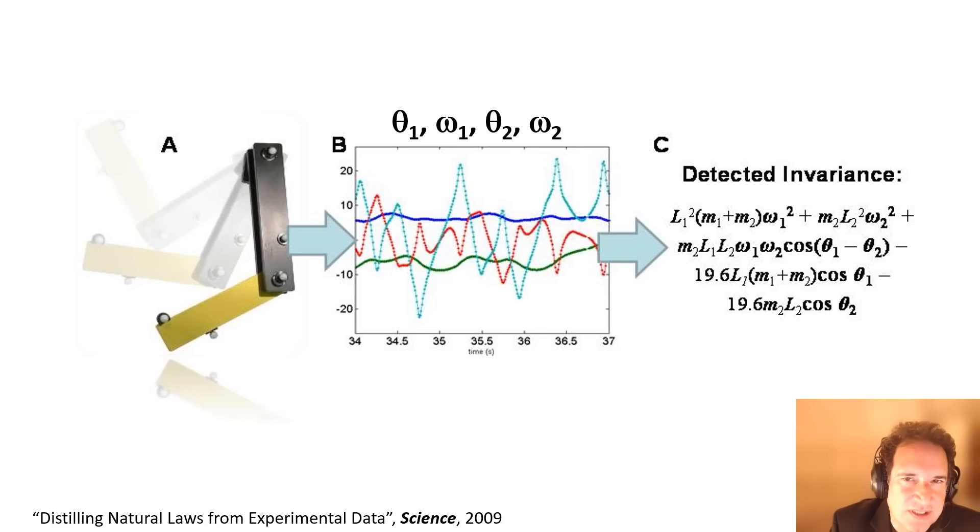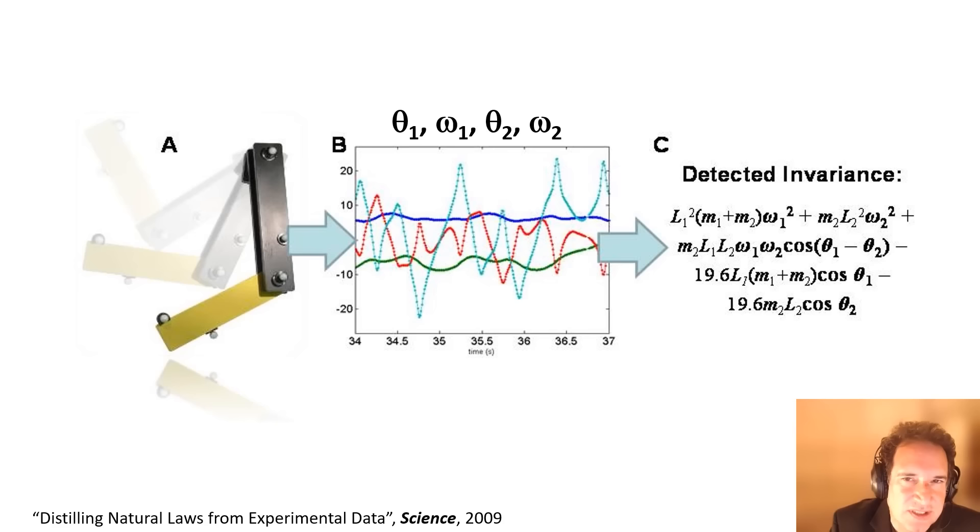So what does that mean? A while ago, maybe almost a decade ago, we published a paper on how we can, using AI, go from data directly to an equation. We recorded the motion of a double pendulum, extracted the angle and angular velocity of the two arms, the four variables, and automatically went from those variables to discover equations that describe those dynamics.